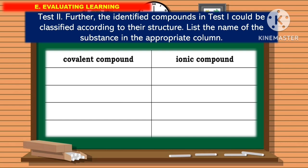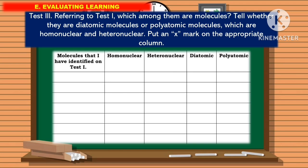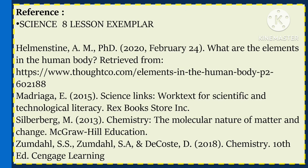For Test 3 in evaluating the learning, referring to Test 1, which among them are molecules, and tell whether they are diatomic molecules or polyatomic molecules, which are homonuclear and heteronuclear. Put an X mark on the appropriate column. Thank you.